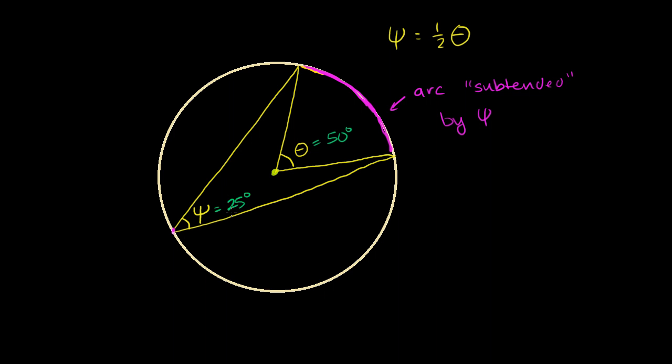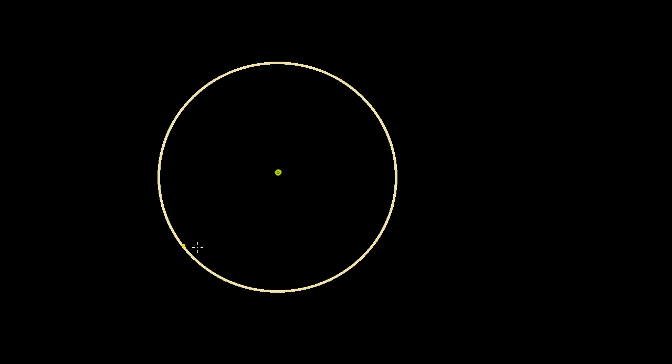So let's actually prove this. A good place to start is a special case. I'm going to draw an inscribed angle where one of the chords that defines it is going to be the diameter of the circle. This is the center right here of my circle. So let me draw a diameter. And then let me define my inscribed angle — this diameter is one side of it, and then the other side is just like that.